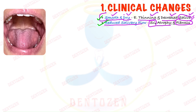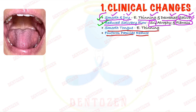The tongue also becomes smooth with aging. This is due to thinning of the epithelium, and importantly, the filiform papillae on the tongue reduce with aging. This reduction in filiform papillae is an important point that can be asked in a viva — what happens to papillae with aging? They reduce.